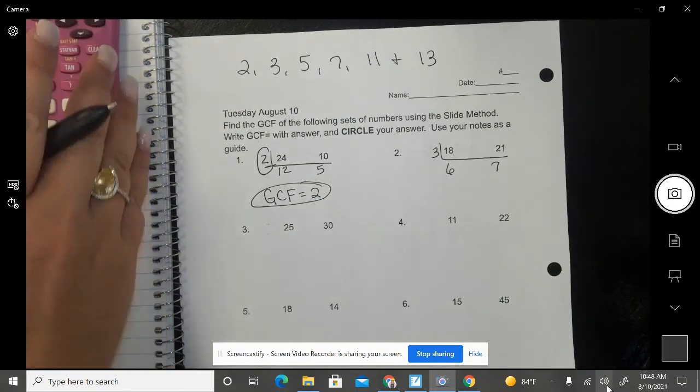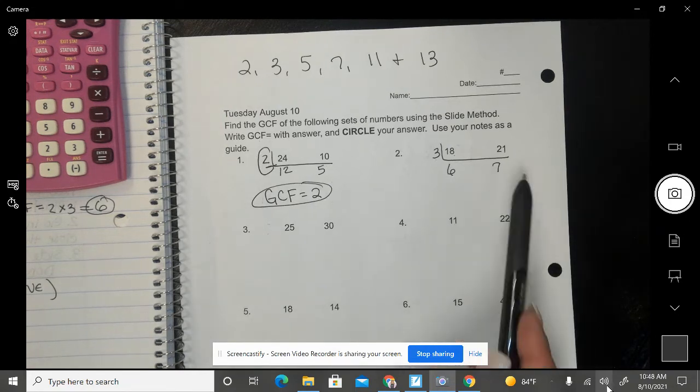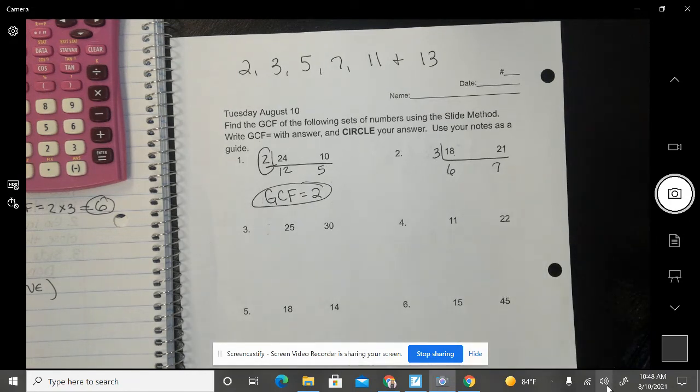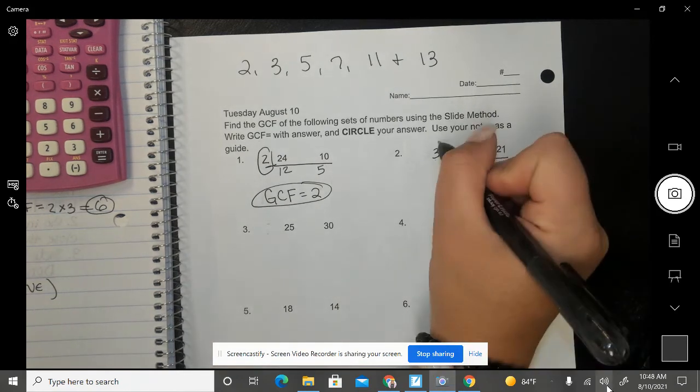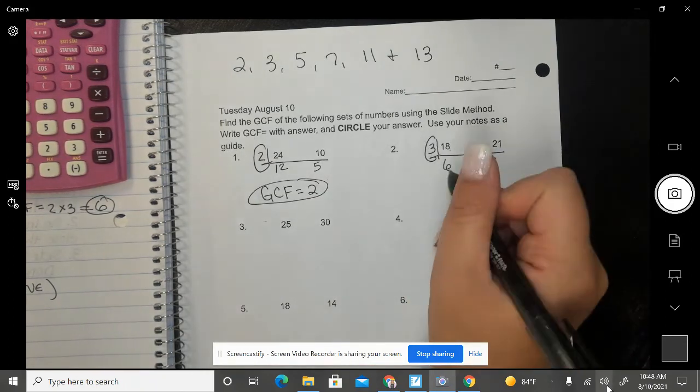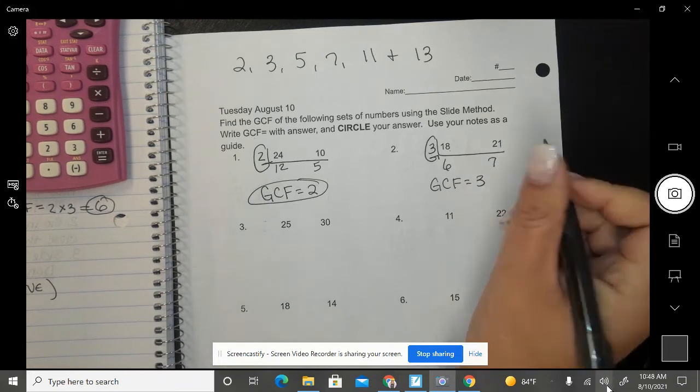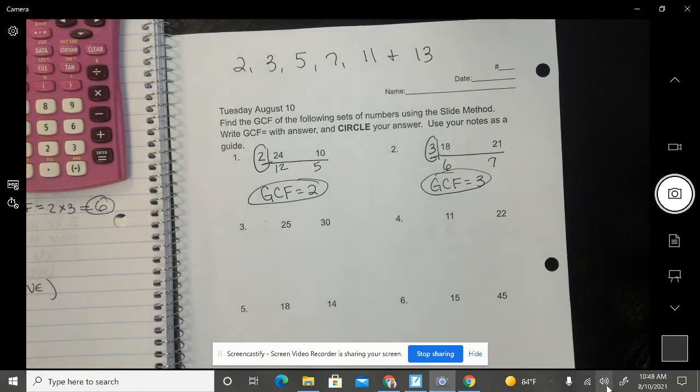So then I go to step 4. Step 4 says I'm going to repeat until there's no more common factors. I have to ask my question, are my numbers back to back on the number line? Well, these numbers are back to back on the number line, so that means I am done. I can't go any further. So that means I'm done. So I can go to step 5 and draw the G, and there's only one number inside the G, so there's no multiplication. So GCF is going to be 3 for 18 and 21.